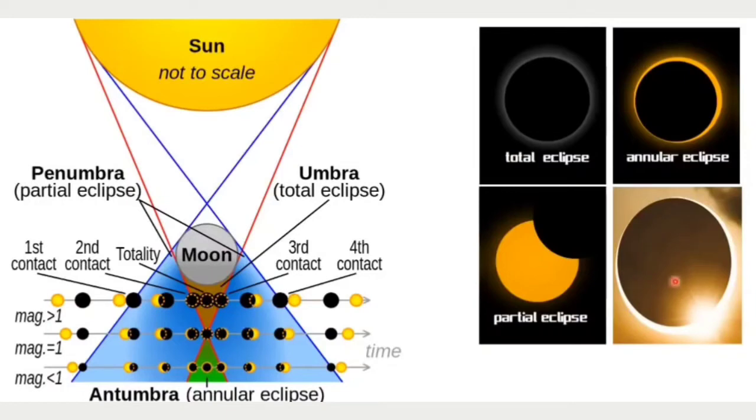So this diamond ring phenomenon actually happens on the periphery of totality trail, where the total solar eclipse was visible, at its periphery we will observe this phenomenon.